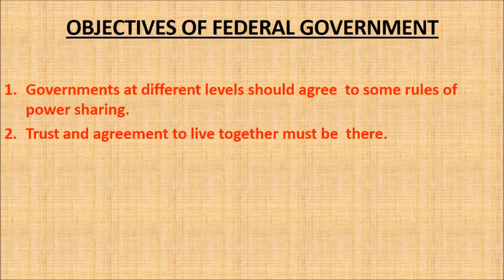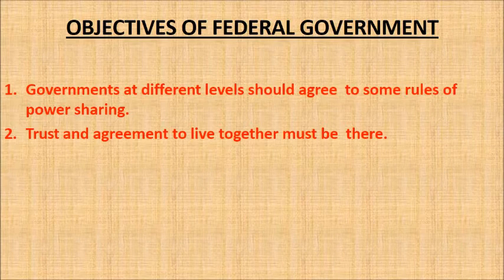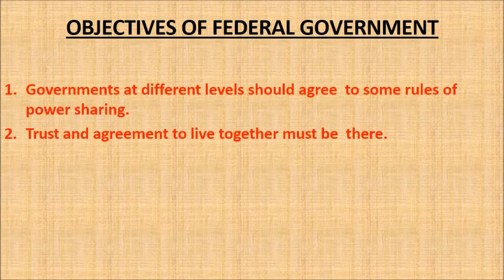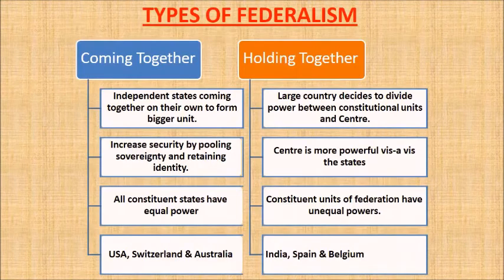This is the continuation of the last point — the federal government has a dual objective. Therefore, two aspects become crucial for the institutions and practice of federalism. First, that the government at different levels should agree to some rules of power sharing. They should also trust that each would abide by its part of the agreement. An ideal federal system has both aspects: mutual trust and agreement to live together peacefully.